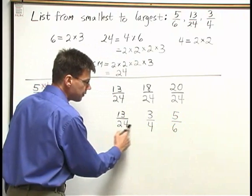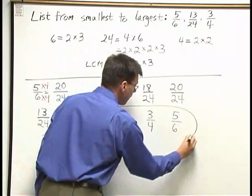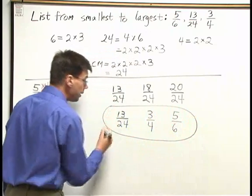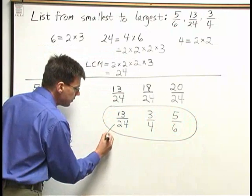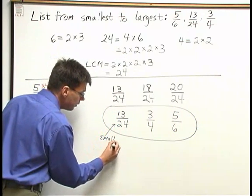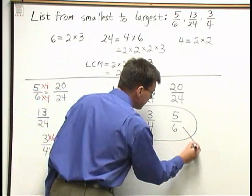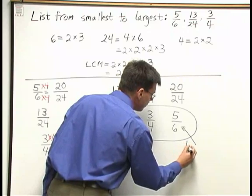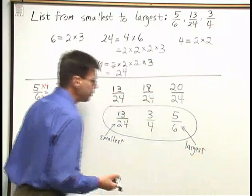So 13 24ths, 3 4ths, 5 6ths are my three fractions written in order from smallest to largest. Now, it's interesting to note that 13 24ths turned out to be the smallest of the three fractions, and 5 6ths actually turned out to be the largest.